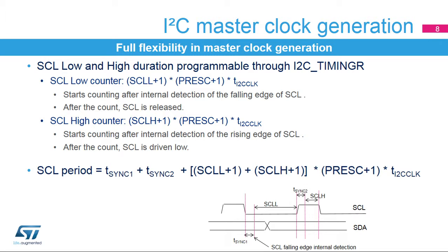The SCL low- and high-level counters start after the detection of the edge of the SCL line. This implementation allows the peripheral to support the master clock synchronization mechanism in a multi-master environment as well as the slave clock stretching feature. Therefore, the total SCL period is greater than the sum of the counters. This is linked to the added delays due to the internal detection of the SCL line edge. These delays, T-SYNC-1 and T-SYNC-2, depend on the SCL falling or rising edge, the input delay due to the filters, and the delay due to the internal SCL synchronization with the I2C clock.